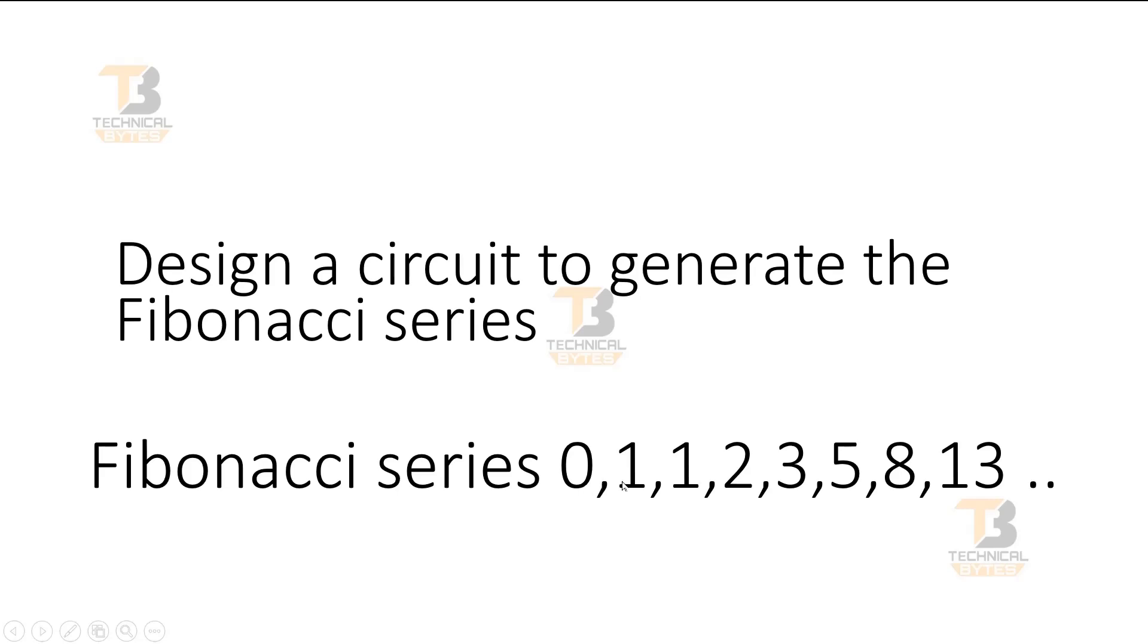Friends, before going to the solution, let us see how Fibonacci series is found. The first number is 0 and the second is 1. How is the third number found? By adding the previous two numbers, so 0 plus 1 is equal to 1.